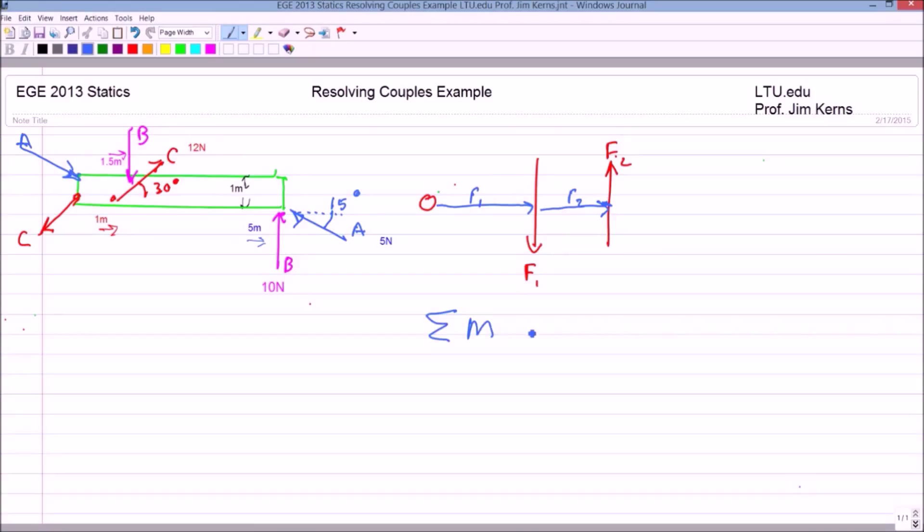Okay, so the sum of my moments is equal to R1 times F, and that is clockwise, so that's a negative, and plus the moment of R1 plus R2 times F. And that is counter-clockwise, so that's positive.